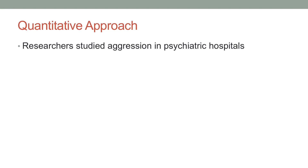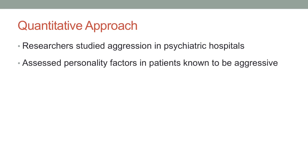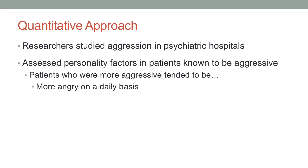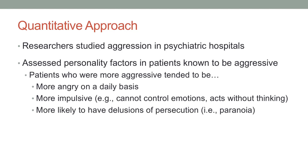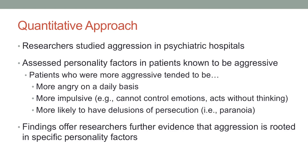One example of the quantitative approach is from research that looks at aggression in psychiatric hospitals. One such study involved researchers looking at various personality factors and measuring them in a numerical way, then seeing which of these was related to aggression. They found that patients who were more angry on a daily basis were more likely to be aggressive, as were patients who were more impulsive — who had a hard time controlling behavior or emotion — and those with more delusions of persecution, or fears of paranoia. This offered a way to test a hypothesis that there are personality variables reliably related to aggression in psychiatric settings.